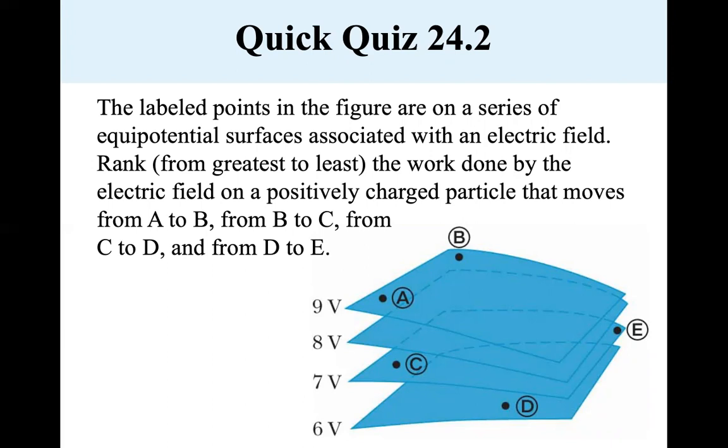Well, from A to B, they're both on the same potential surface. So no work is done there. So that's zero work is done. And from B to C, let's see, here's B, and to C, there's C, so it's nine volts to seven volts. So the system does two volts, so the system does two joules of work to get it from nine volts to seven volts.